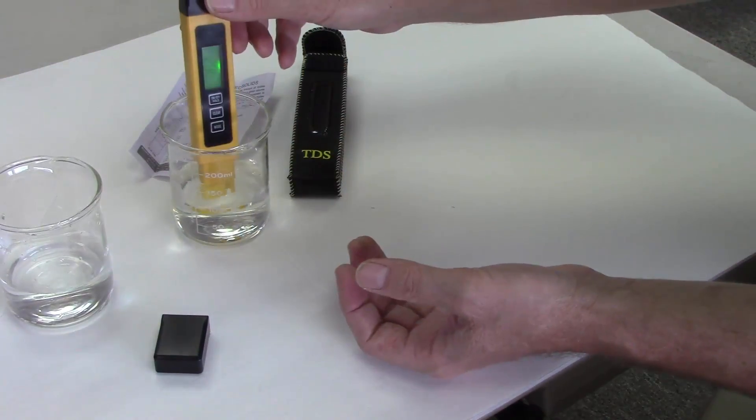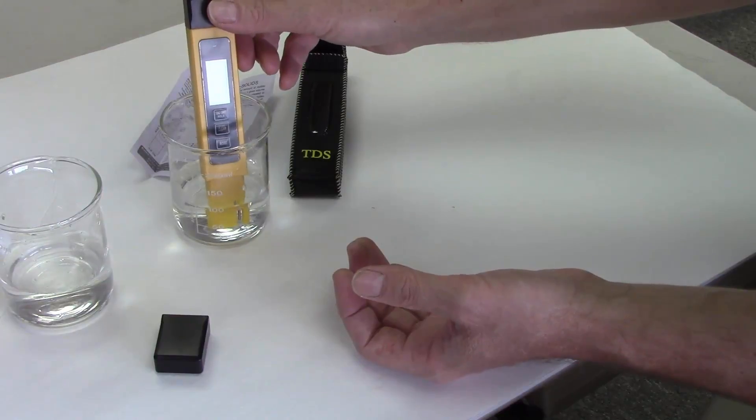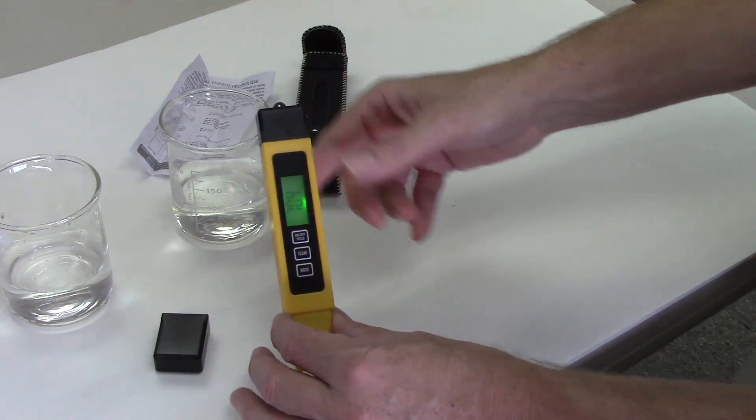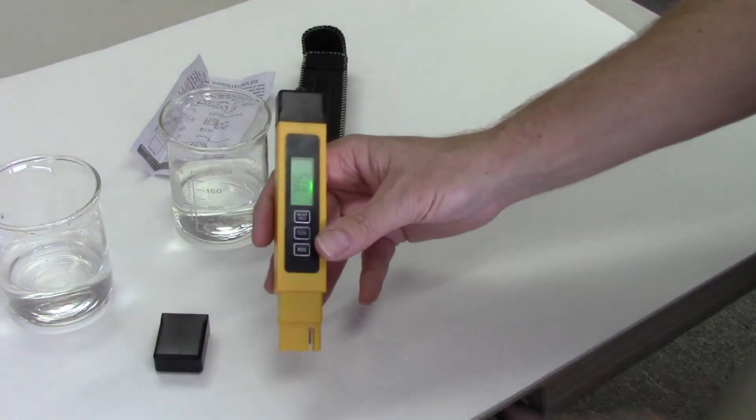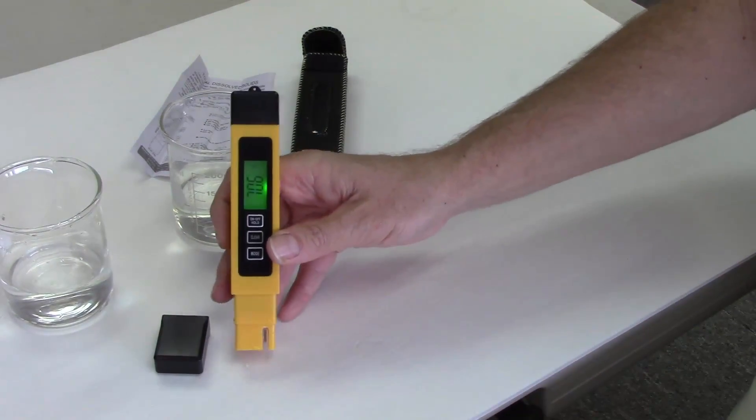So for example, in Fahrenheit right now, the probe is probably out of the meter here, but I'm getting a reading of about 70 degrees, which is what my water is sitting at right now today because I've had it out for a little while. So that's how the TDS meter works, folks. Thanks.